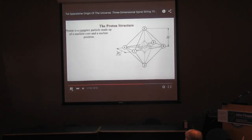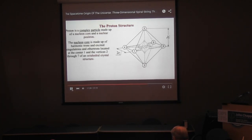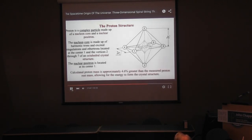The proton is a complex particle made up of a nuclear core and a nuclear positron. The nuclear core is made up of harmonic trons and excited cingulatrons and ethertrons, located at the center and the vertices of an octahedral crystal structure. The calculated proton mass is approximately 4.6% greater than the measured proton rest mass, allowing for the energy to form the crystal structure.